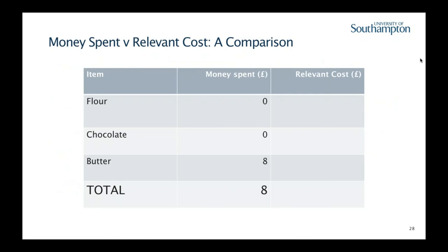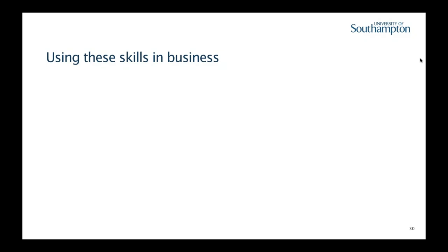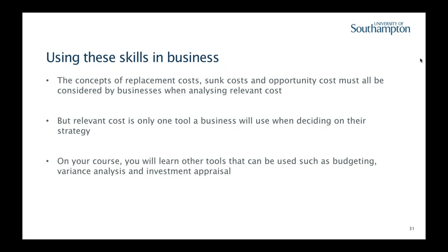Now let's compare how much we actually spent to the relevant costs. The actual money spent was only £8 for the butter. But when we look at the relevant costs: the flour has a replacement cost of £5, and the butter has an opportunity cost of £12. So our total relevant cost is £17 — more than double the actual money spent. If this were a business and we said it only cost £8 because that's what we spent, we would significantly underestimate the true cost. That's why it's so important to be aware of relevant costs.